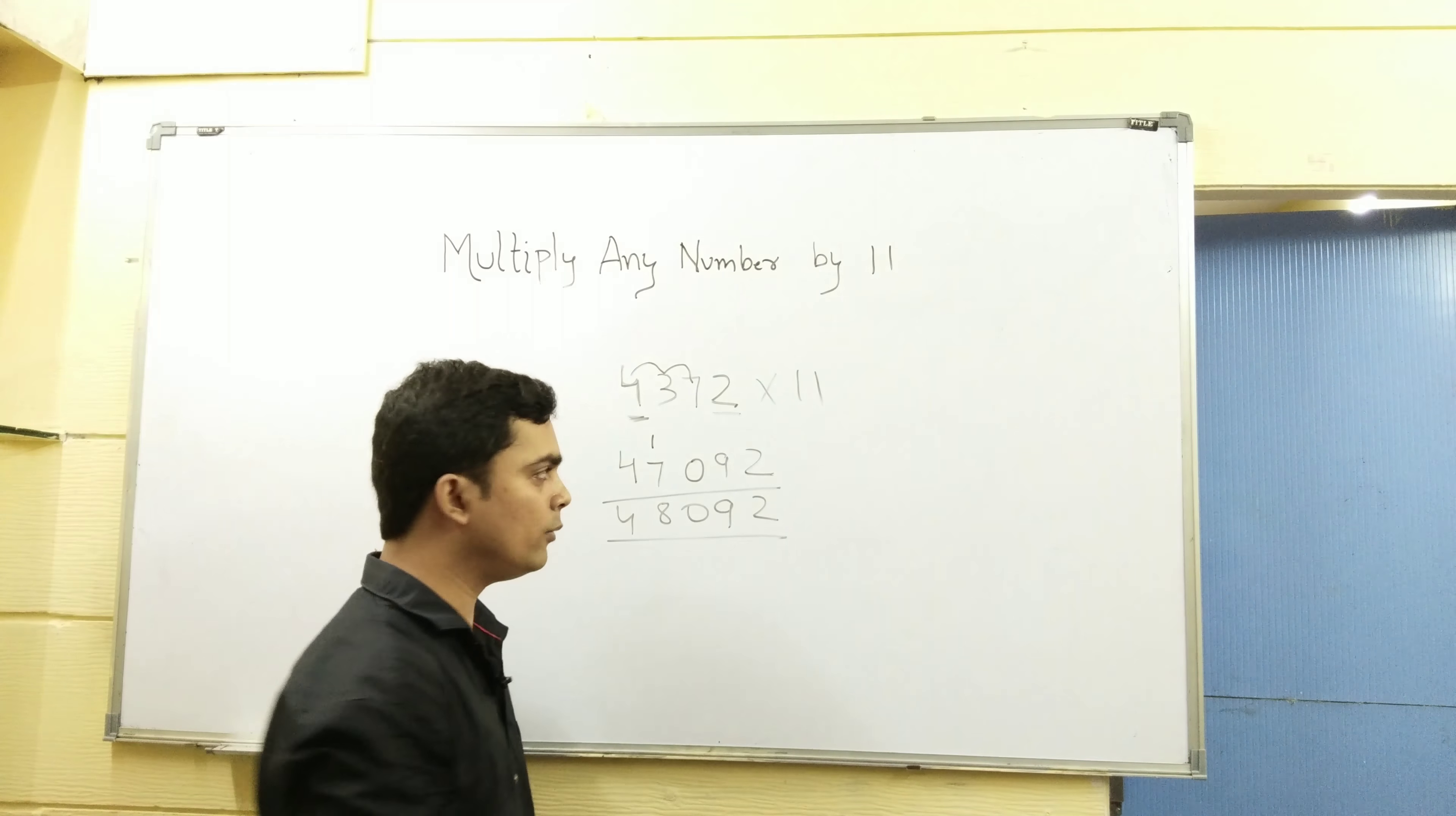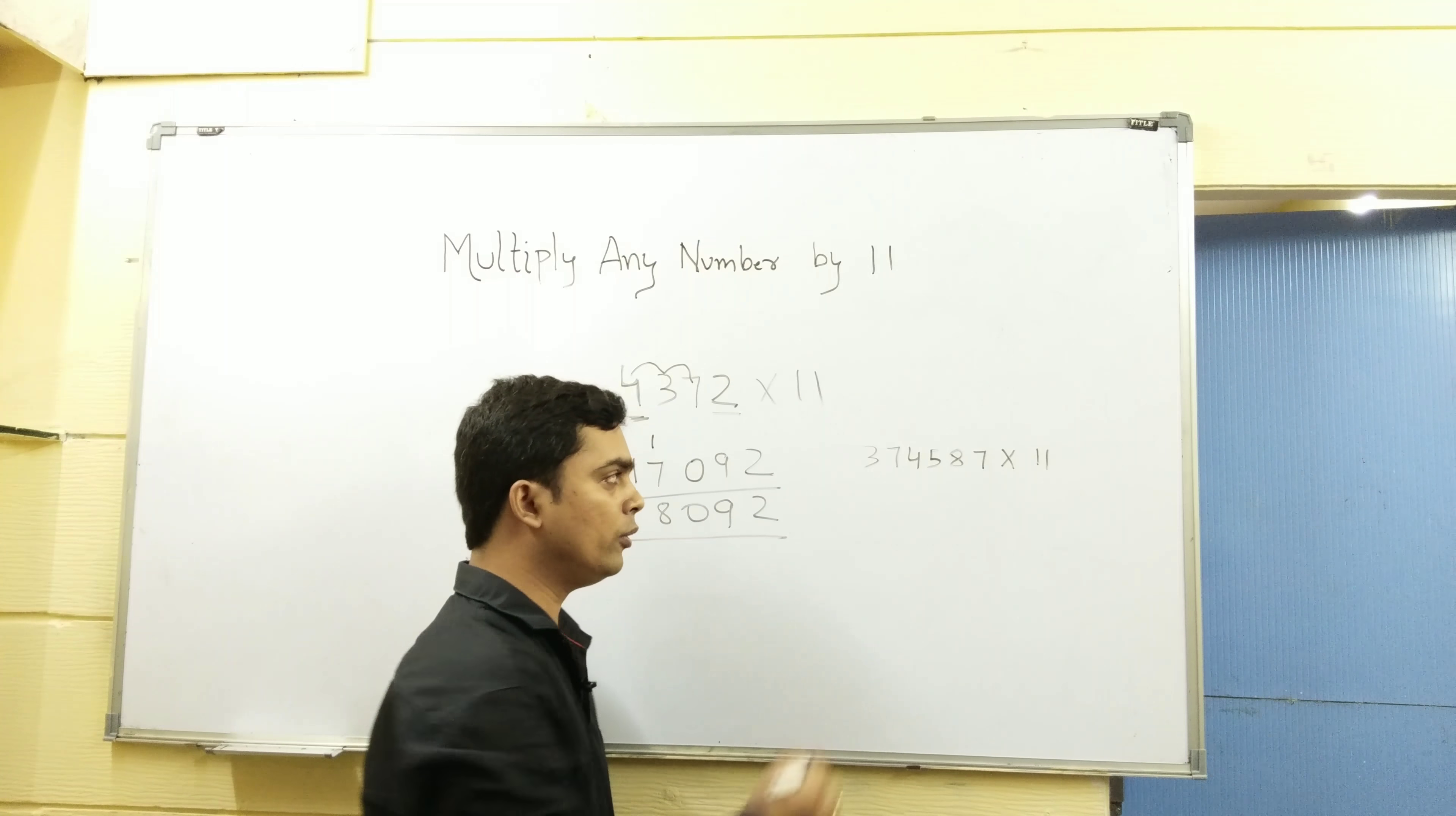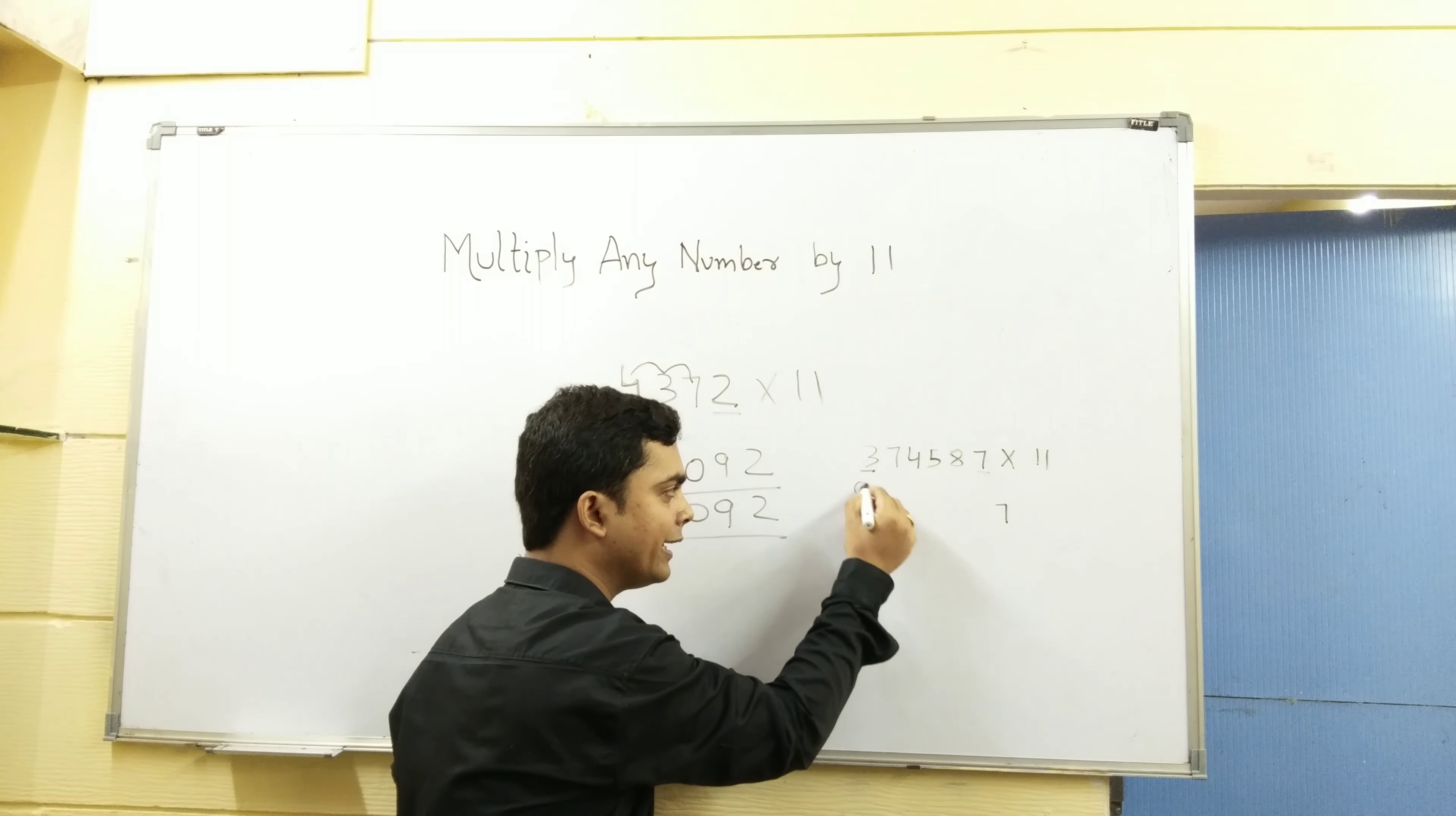Here 2 examples. 374587 multiply 11. What do you do? First number, last number. 3, 7. 7 plus 3, 10. What do you do? 0, 1 carry. 7 plus 4, 11. 1, 1 carry.